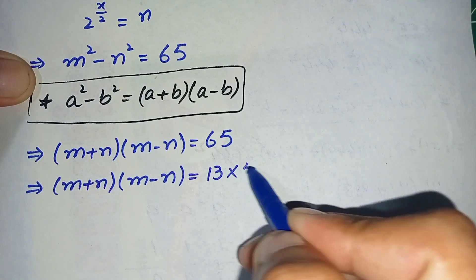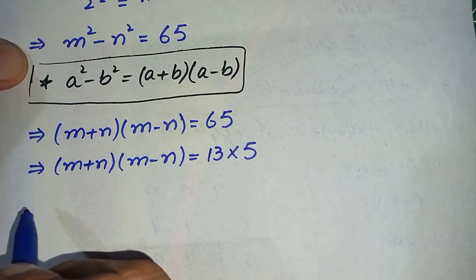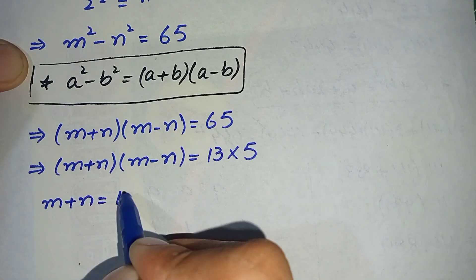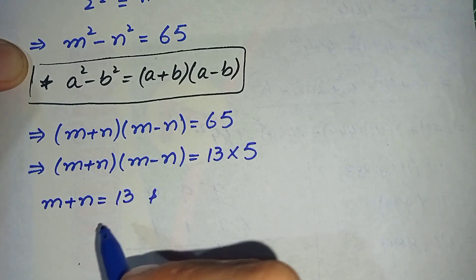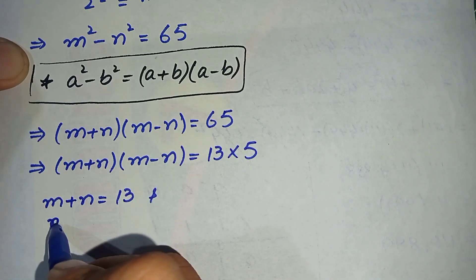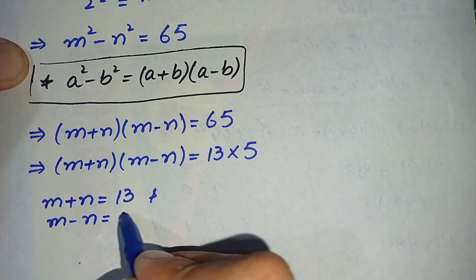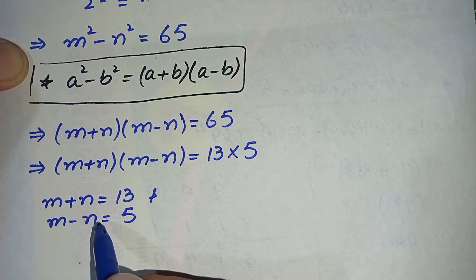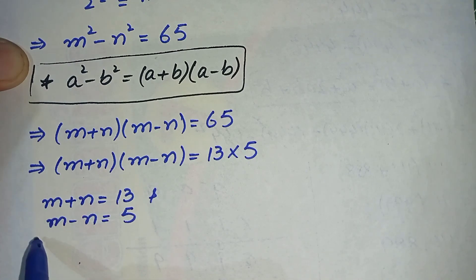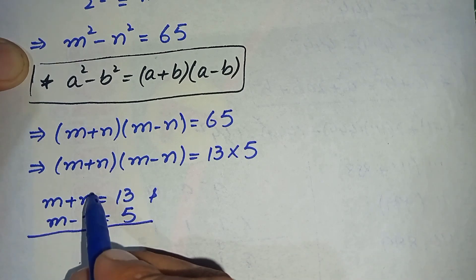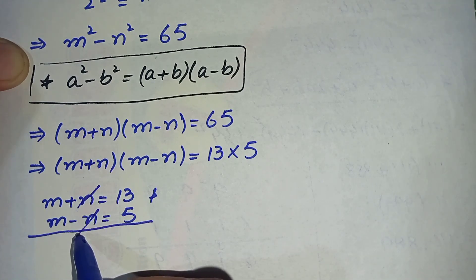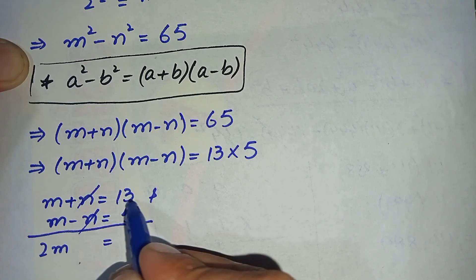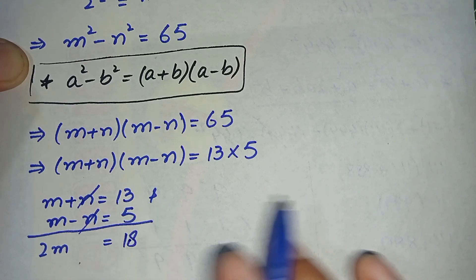In the next step we factorize the right hand side. We can write 65 as 13 times 5. So let us suppose m plus n is equal to 13 and m minus n is equal to 5. Now we will add these two equations to find the value of m — the plus n and minus n will cancel each other.